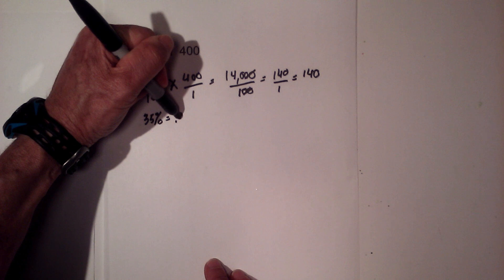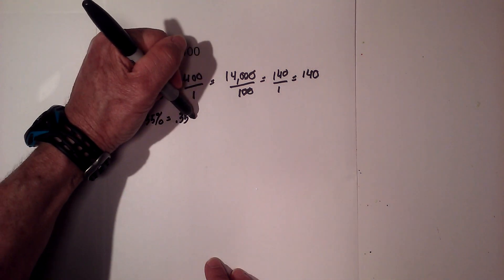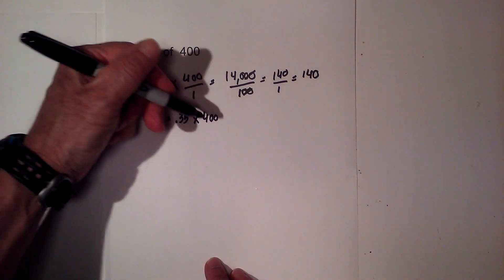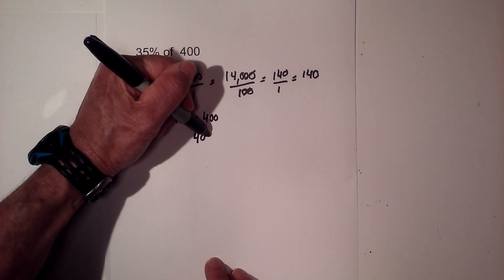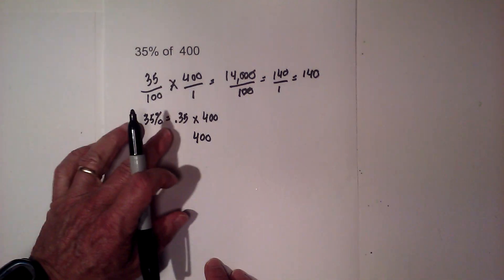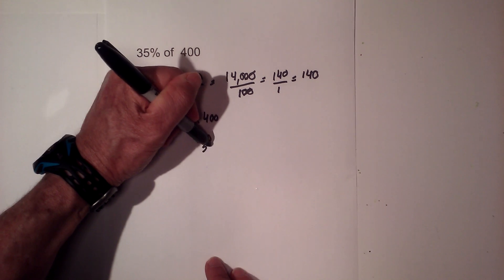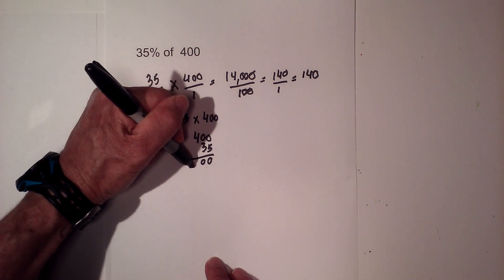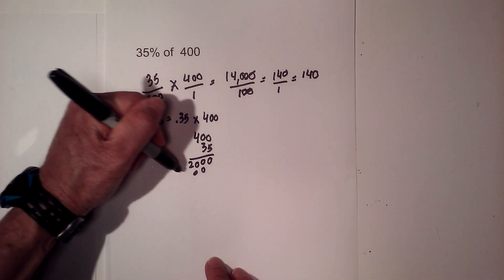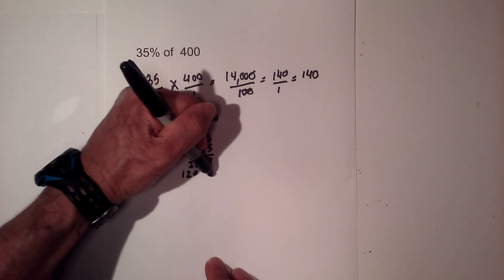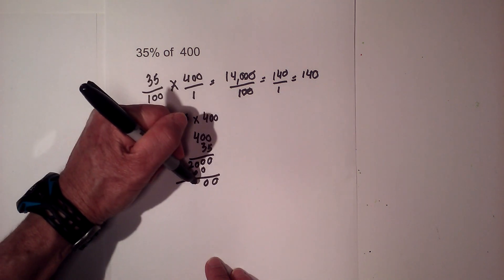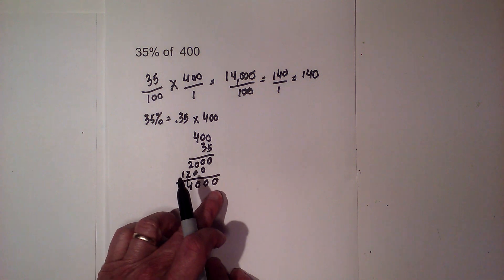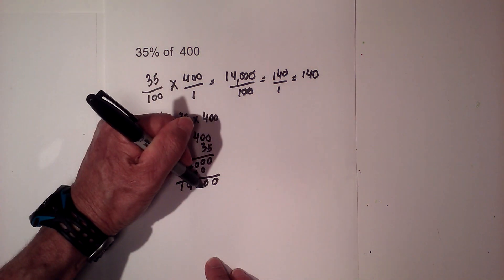Now convert 35% to a decimal: 0.35. Multiply by 400, replacing 'of' with multiplication. Multiply like there are no decimals: 400 times 35 equals 14,000. Remember we need two decimal places, so placing the decimal gives 140.00, which equals 140.